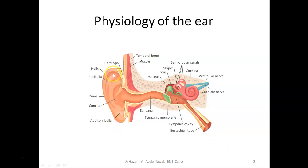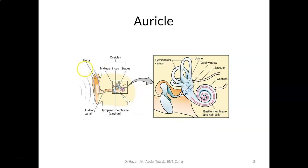We start from the ear pinna, or the auricle. What is the function of the auricle? From this picture you can see that the auricle works as a collector of sound waves. It also localizes the sound — to know where the source is, from which direction it comes — and localizes the sound to the ear canal.